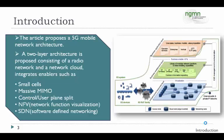On an abstract level, 5G will be a two-layer network architecture consisting of a radio network and a network cloud, which will be integrating enablers such as small cells like pico cells and femto cells, massive MIMO, control and user plane split. We will also discuss network function virtualization and software defined networking in detail.